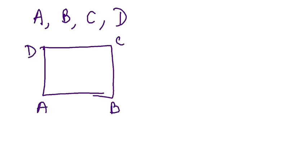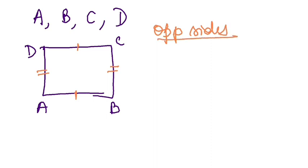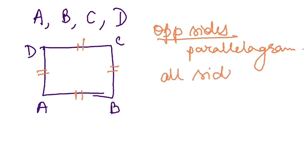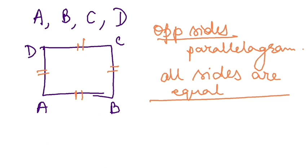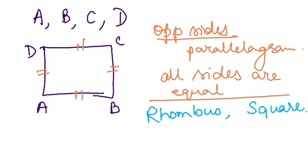Now what can happen? If the opposite sides are equal, then it will obviously be a parallelogram. Now if I say all sides are equal, then what kind of quadrilateral can it be? There are two possibilities: one can be a rhombus and the other can be a square, because in a rhombus all sides are equal and in a square all sides are equal.